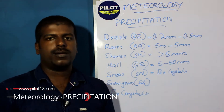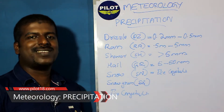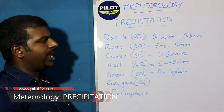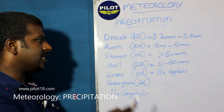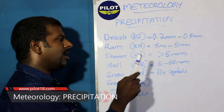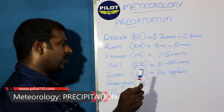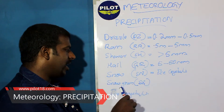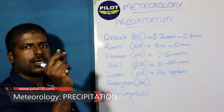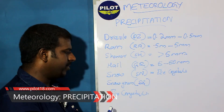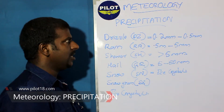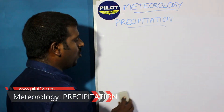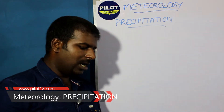To summarize precipitation types: drizzle is 0.2 mm to 0.5 mm, rain is 0.5 to 5 mm, shower is greater than 5 mm, hail is 5 to 50 mm, snow is composed of ice crystals, snow grain is a thick snow grain type, and then ice crystals. These are all precipitated from clouds. So how does precipitation occur?